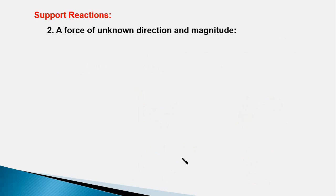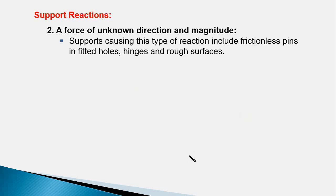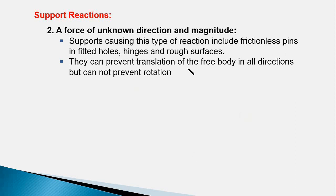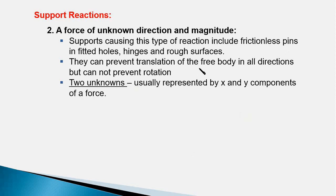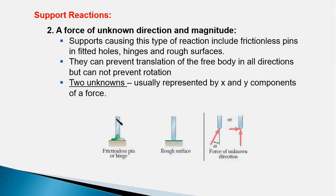The second category of support reaction is an unknown force in both direction and magnitude. Supports that cause this type of reaction include frictionless pins, hinges, and rough surfaces. They can prevent translation of the free body in all directions but cannot prevent rotation. Therefore there are two unknowns, usually represented by the x and y components of a force. For example, a rigid body connected to the ground through a hinge has its motion restricted in both horizontal and vertical directions.